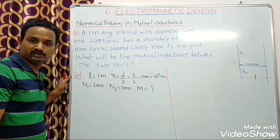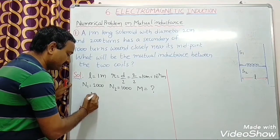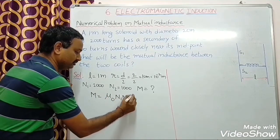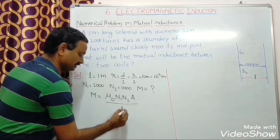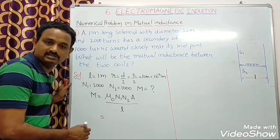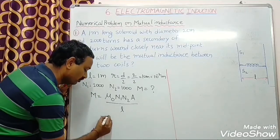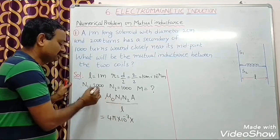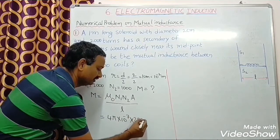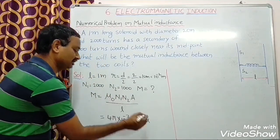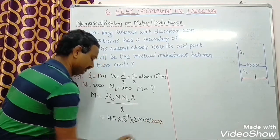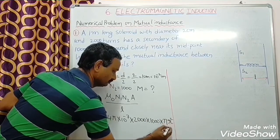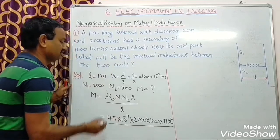We have formula for mutual inductance, that is M equal to μ0 N1 N2 A by L. Here μ0 means the constant, that value is 4π into 10 power minus 7. N1 means 2000, N2 means 1000. A means I can write π R square. L means 1 meter.